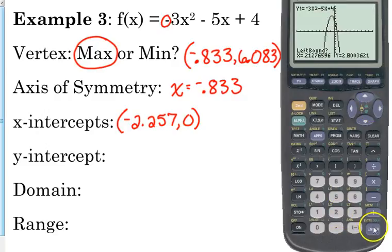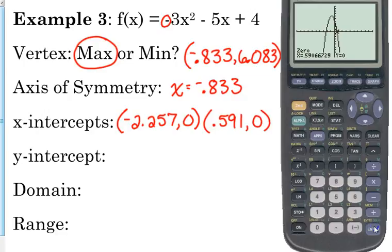This time, the left bound is above the x-axis. The right bound is below. This time it told us that the y-value is 0, so go figure. Sometimes it does, sometimes it doesn't. This one is 0.591, 0.